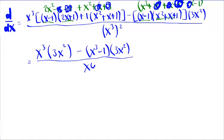Alright, now clean up the top one more time. So we're going to have three x to the fifth minus three x to the fifth minus three x squared over x to the sixth.